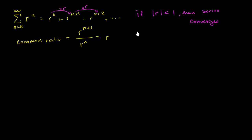That made sense — we've proven it, but it also makes logical sense. If the absolute value of r is less than one, then each term is going to be multiplied by that common ratio, and it's going to decrease on and on and on, so it makes sense that even though this is an infinite sum, it will converge to a finite value.